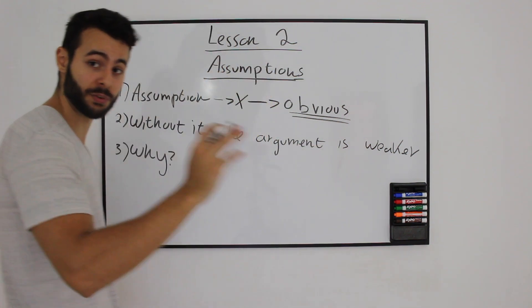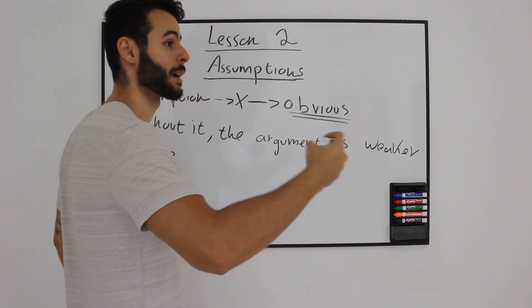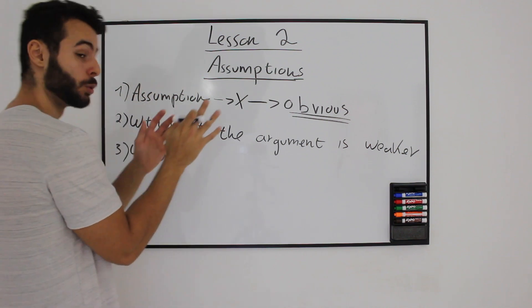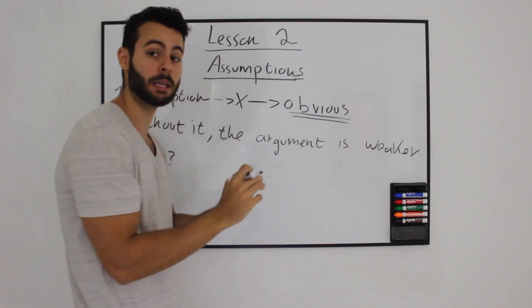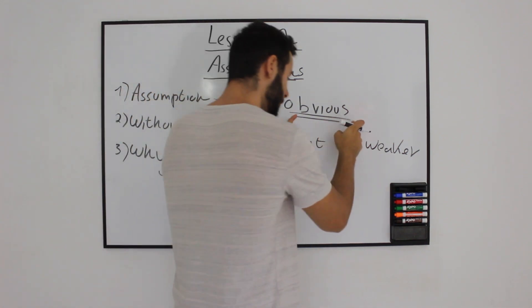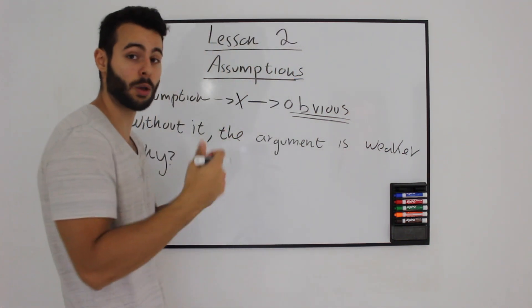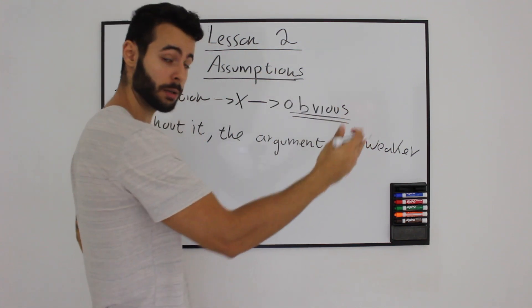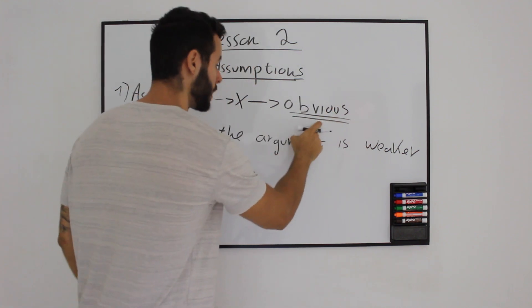So, we have an assumption. The first thing after we read the paragraph and understand what the writer actually means, we need to find and know that the assumption will never be inside the paragraph, and also it will be obvious to the writer of the paragraph. It's something that's so obvious the writer doesn't even need to mention it, and he is depending on it.